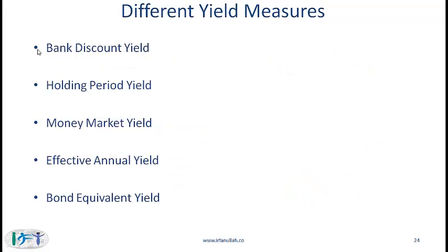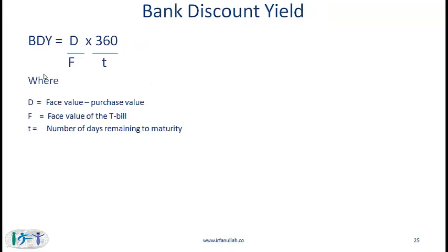Here is the list of yields and we will discuss each one of them. The first one is bank discount yield, and this is used with T-bills. Bank discount yield is equal to the discount divided by the face value, multiplied by 360 over the number of days remaining till maturity.